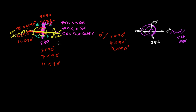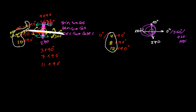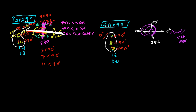Now, look at the numbers in the horizontal-axis region. You can see: 4, 8, 12 on one side and 2, 6, 10 on the other. So we have 2, 4, 6, 8, 10, 12 — all the even multiples. This means 2n×90° corresponds to the 0°/180°/360° axis. It is always an even number line.